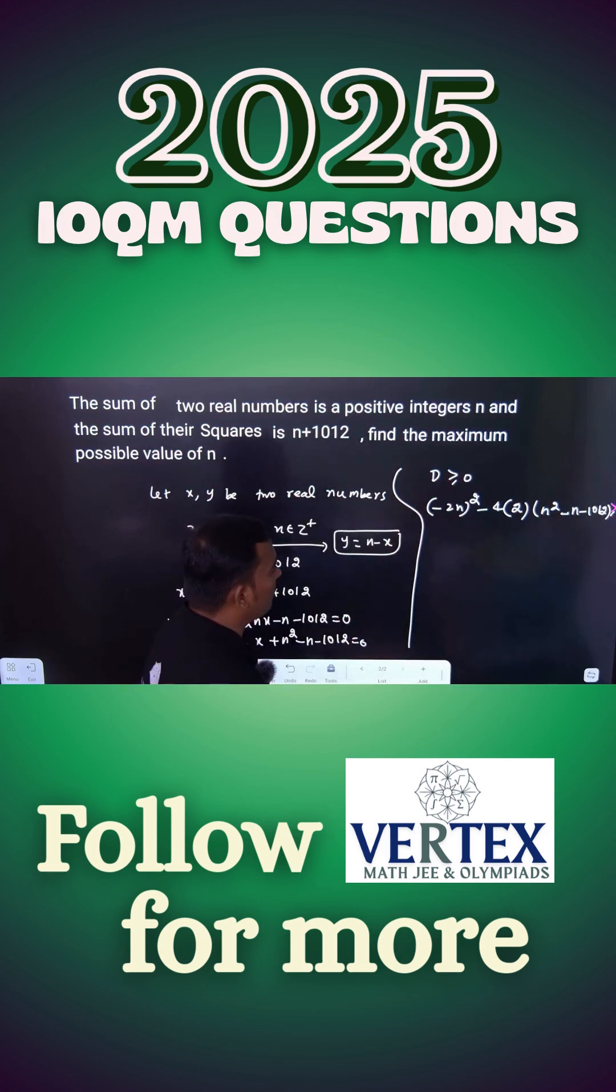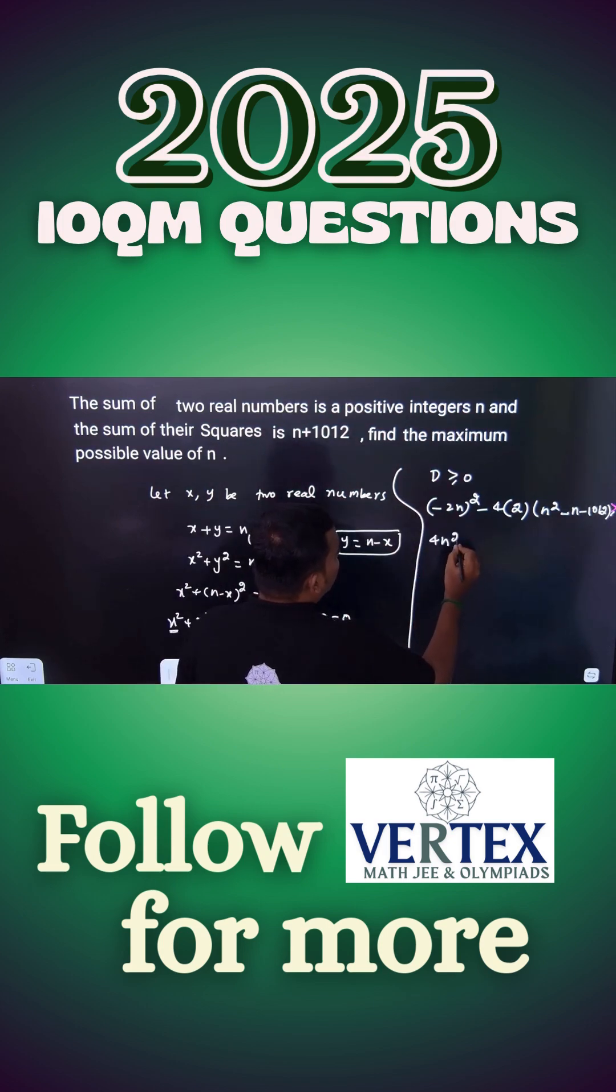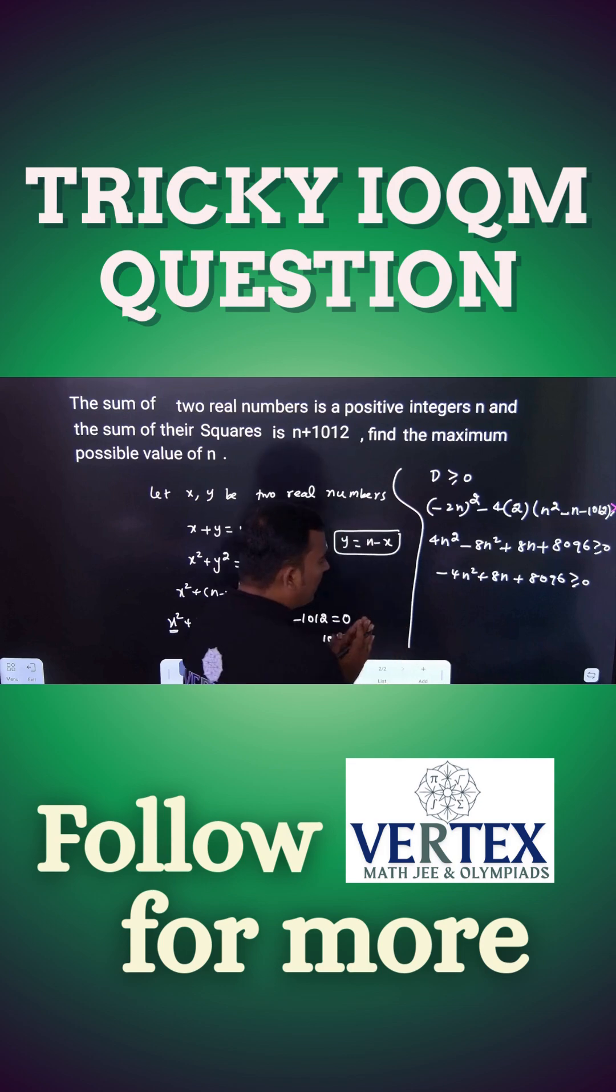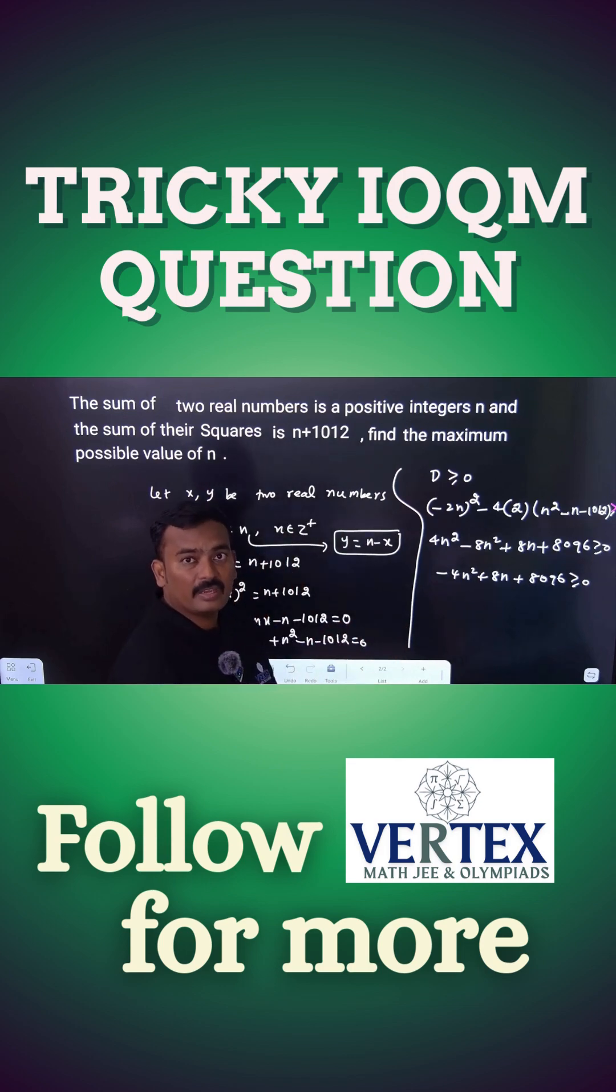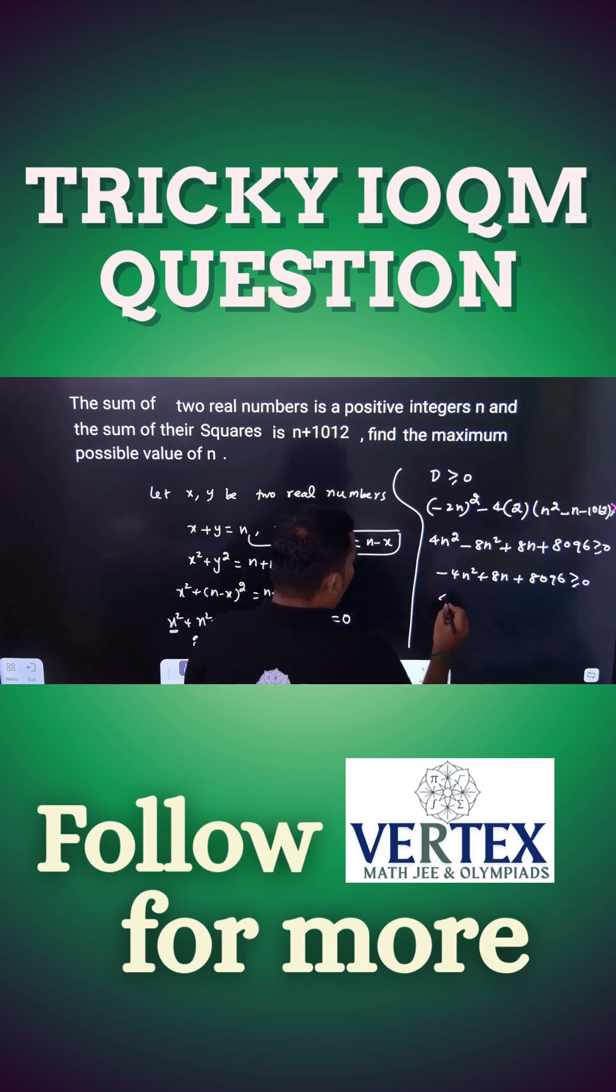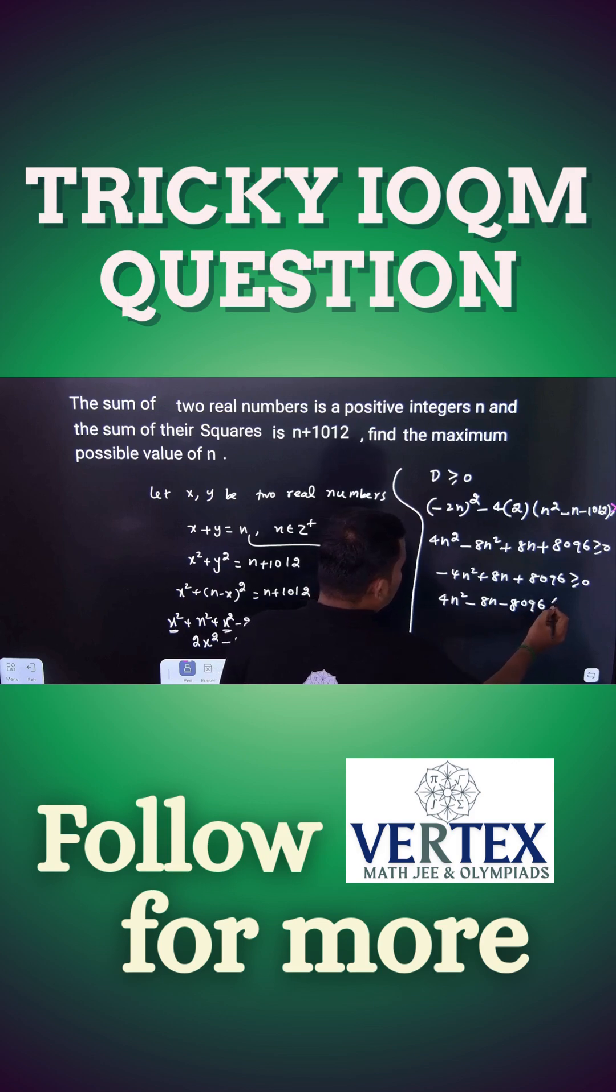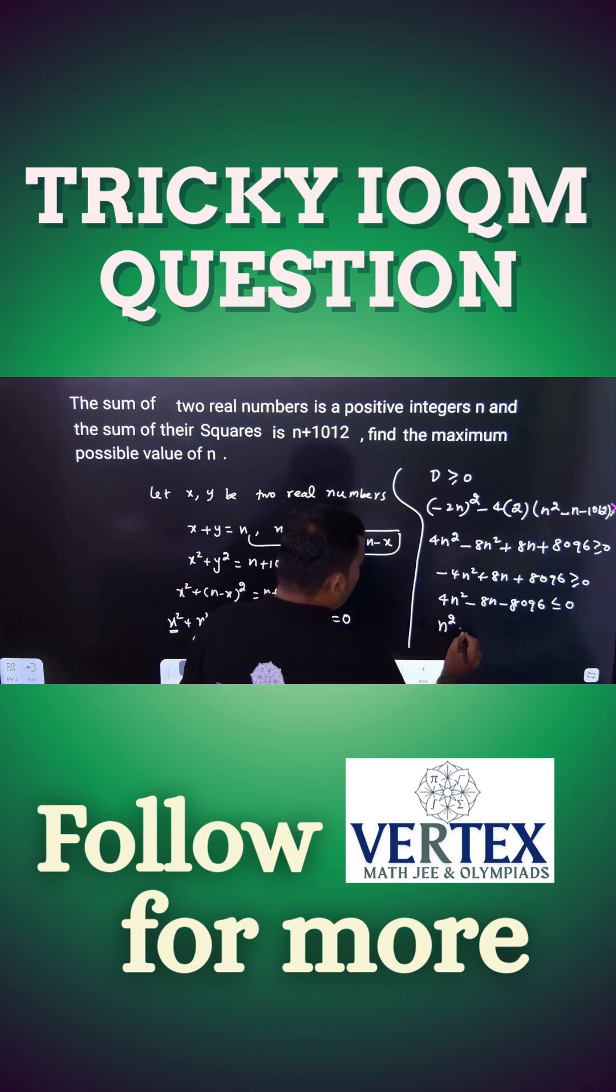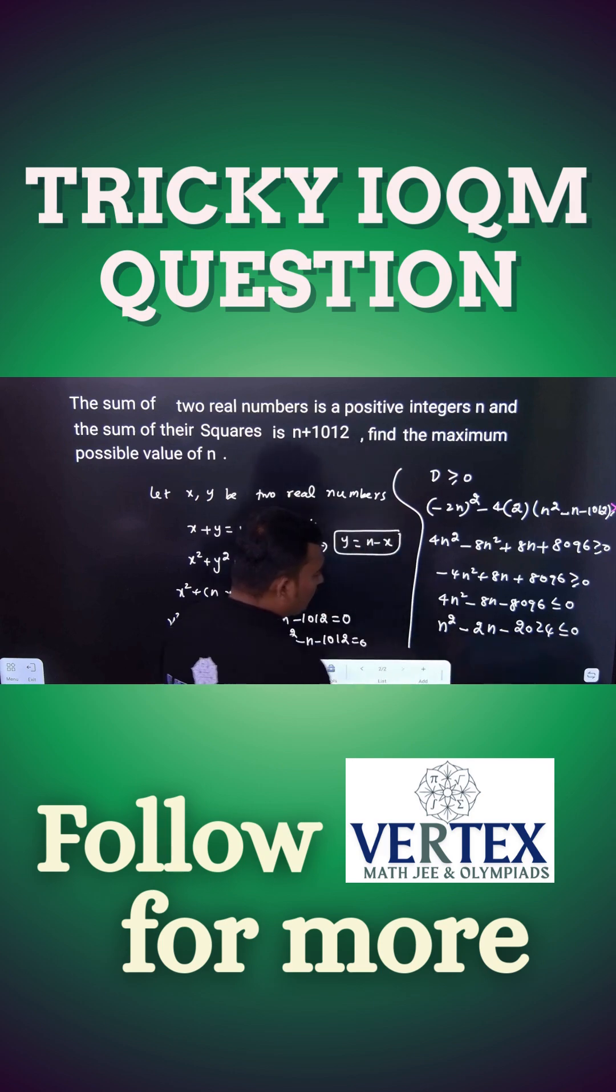Now you can simplify. 4n square minus 8n square is what? Minus 4n square plus 8n plus 8096 greater than 0. You can multiply by minus 1 both sides. The inequality will be changed. Therefore, 4n square minus 8n minus 8096 is less than or equal to 0. You can see each term is divisible by 4. You have to divide by 4. So n square minus 2n minus 2024 is less than or equal to 0.